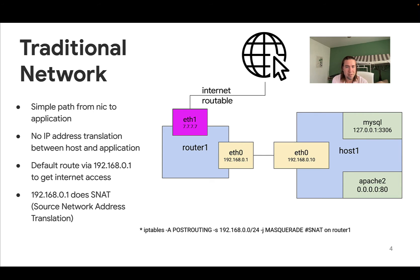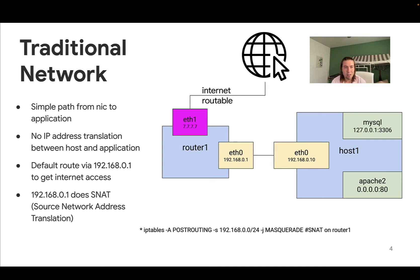Router 1 has two interfaces: one with an internet-routable IP address, and one on the same private network as host 1. Router 1 will translate traffic coming from host 1 so that the source address gets translated to the 7.7.7.x address. An example of doing that is the IP tables rule at the bottom, where we set a masquerade rule so any traffic coming from 192.168.0.0 will get masqueraded. On host 1, the default route is configured as 'default via 192.168.0.1', meaning any traffic not in that 192.168 network will get sent to router 1.